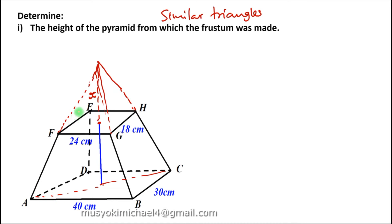So in this case I have a smaller pyramid. Let me have this apex as V. I have a smaller pyramid and also I have a bigger pyramid. The bigger pyramid is A, B, C, D, V — all of it. And the smaller pyramid is E, F, G, H, V. So using the knowledge of similar triangles,